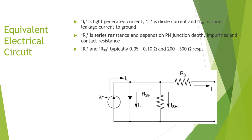The typical values of the series resistance RS range around 0.05 to 0.1 ohm, whereas the shunt resistance has a larger value and is around 200 to 300 ohms.